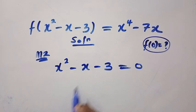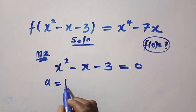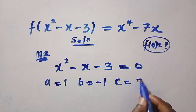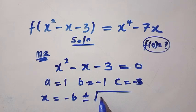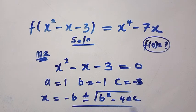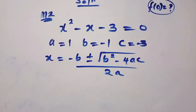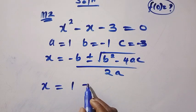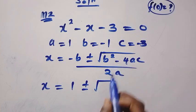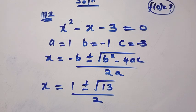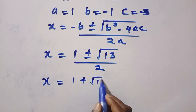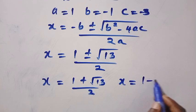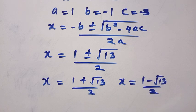I want to find the value of x by applying the quadratic formula. We know the coefficient of x squared is 1, b is minus 1, and c is minus 3. Applying the quadratic formula, x equals minus b plus or minus the square root of b squared minus 4ac, divided by 2a. Substituting, we have 1 plus or minus the square root of 13, divided by 2. So we have two values: x equals 1 plus root 13 over 2, and x equals 1 minus root 13 over 2.